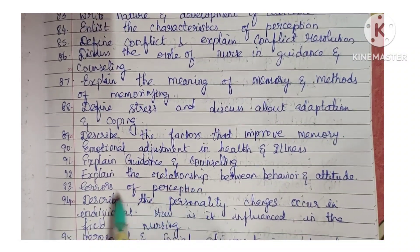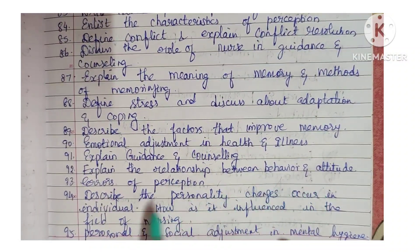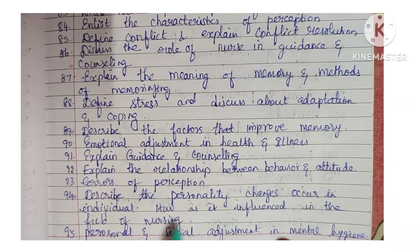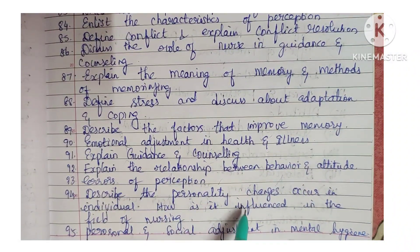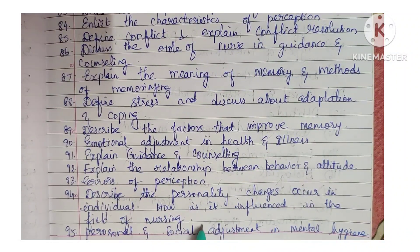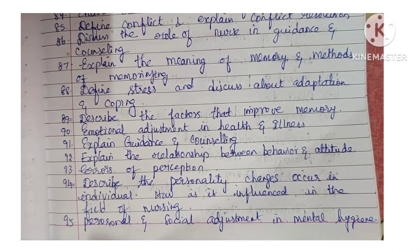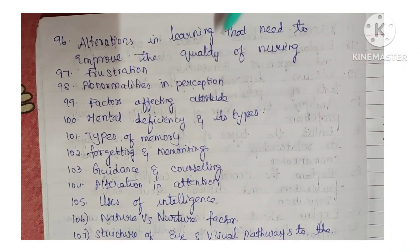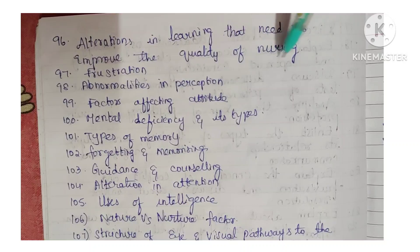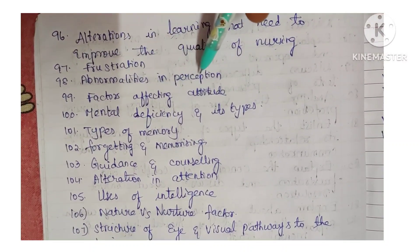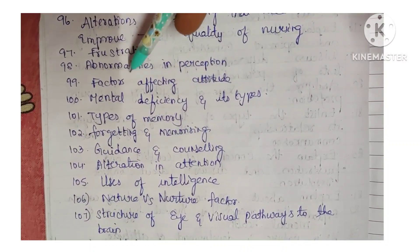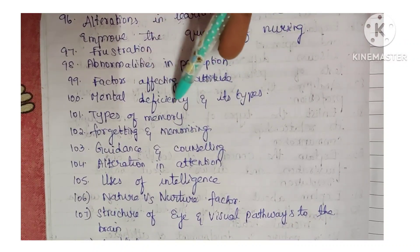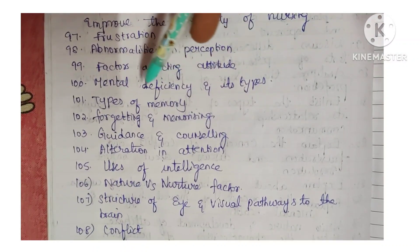Next: explain guidance and counseling. Next: explain the relationship between behavior and attitude. Next: errors of perception. Next: describe the personality changes that occur in an individual and how it is influenced in the field of nursing. Next: personal and social adjustment in mental hygiene. Next: describe the factors that improve memory.